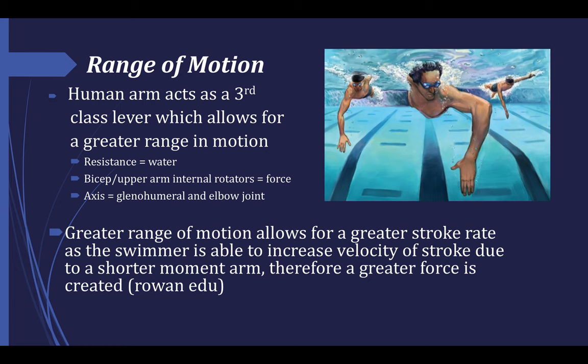The glenohumeral joint operates as the primary axis of rotation as the arm enters the water parallel to the surface to decrease drag during the forward reach portion of the stroke, as seen in the far right of the image, and then is still the primary axis of rotation as the stroke moves into the downward phase, as seen in the left part of the image. The shoulder then abducts as the elbow flexes, as seen in the middle illustration, as the swimmer transitions from the downstroke phase to the glide phase. A greater range of motion allows for a greater stroke rate as it allows for faster cycling of the stroke. A greater velocity of the stroke is then generated due to a smaller moment arm caused by the third-class lever system of the human arm, and the smaller moment arm creates a greater force by the muscles.